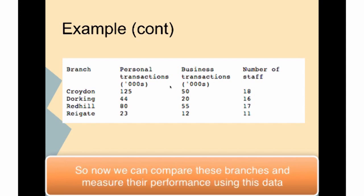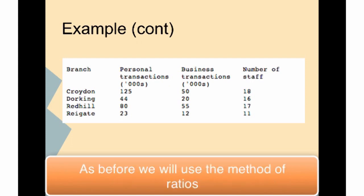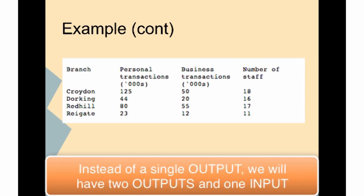Now we can compare these branches and measure their performance using this data. As before, we're going to use the method of ratios, but instead of having one input and one output, we're going to have one input and two outputs.